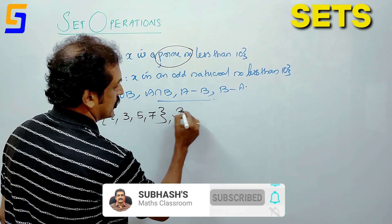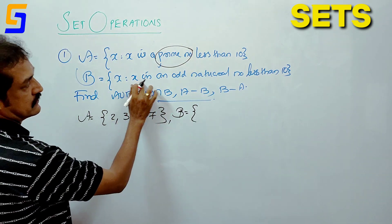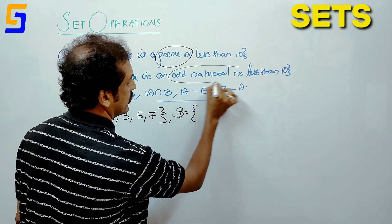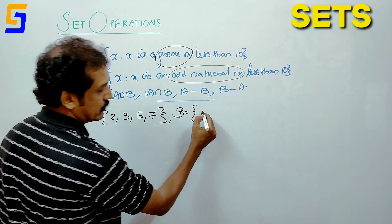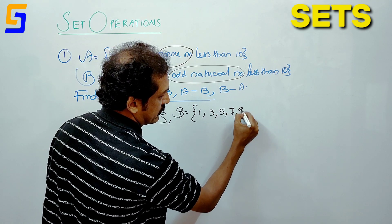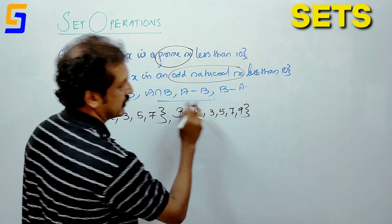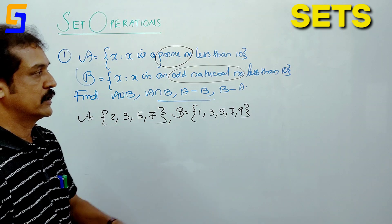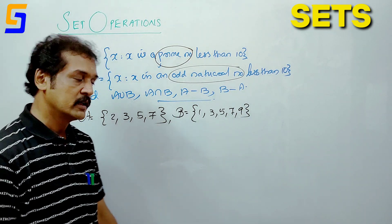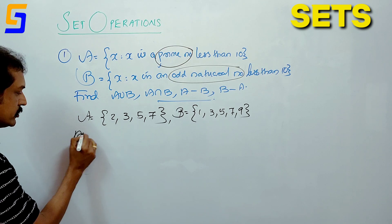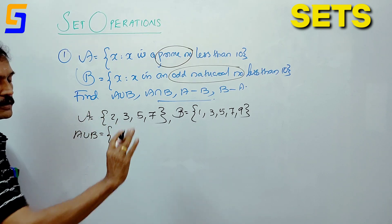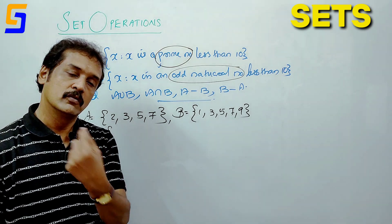Next, for set B: B is equal to the set of x where x is an odd natural number less than 10. The odd natural numbers are 1, 3, 5, 7, 9. So B equals {1, 3, 5, 7, 9}. Now let's find A union B.